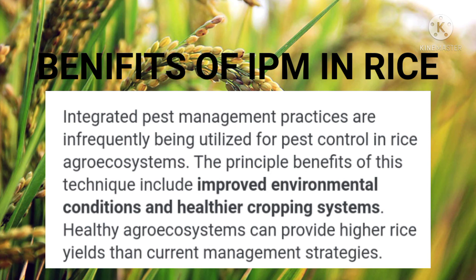The benefits of IPM in rice are that these practices are increasingly being utilized for pest control in rice agroecosystems. The principal benefits include improved environmental conditions and higher cropping system productivity. Healthy agroecosystems can provide higher rice yields than current management strategies, and this is an effective strategy for obtaining high rice yields while protecting the environment and creating a more sustainable agroecosystem.